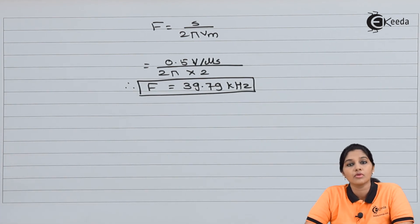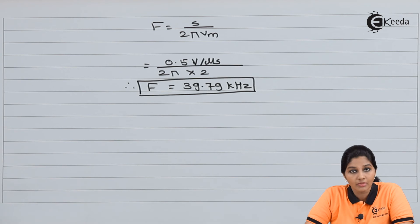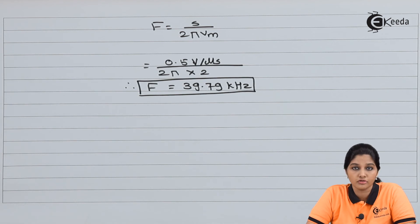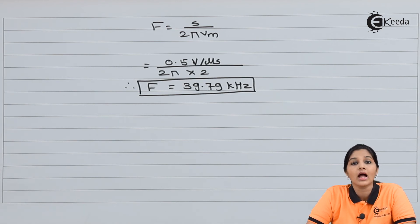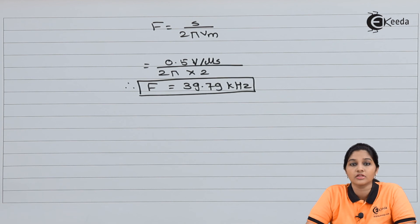So these are some problems based on the various parameters of op-amp, which include slew rate, frequency of operation, input bias current, and input offset current. By using the various formulas we can find out the different parameters of op-amp. I hope you understand the topic and the problems based on op-amp. Thank you very much for watching this video. Stay tuned to Ikira, subscribe Ikira. Thank you.